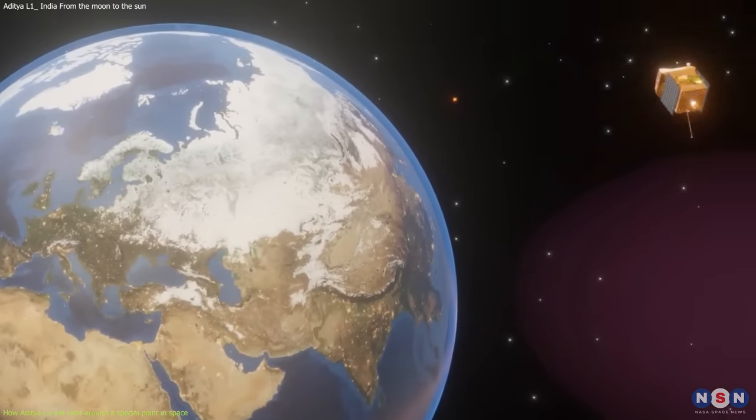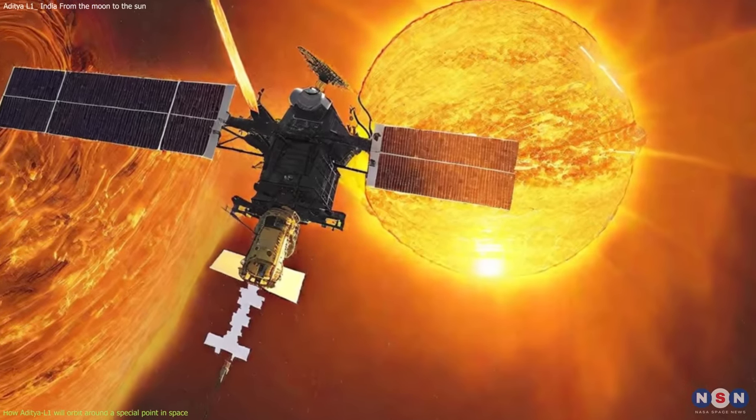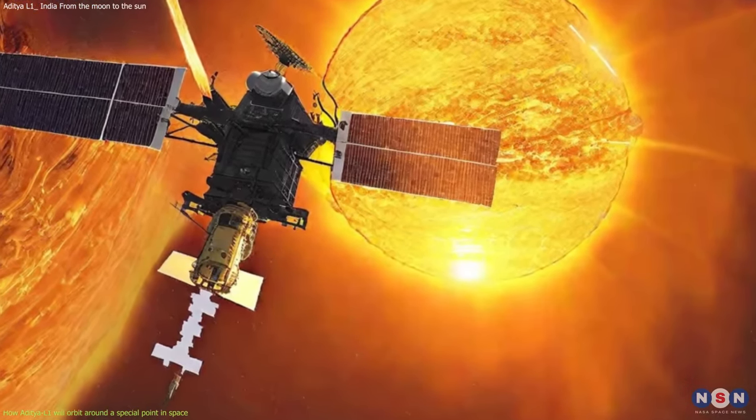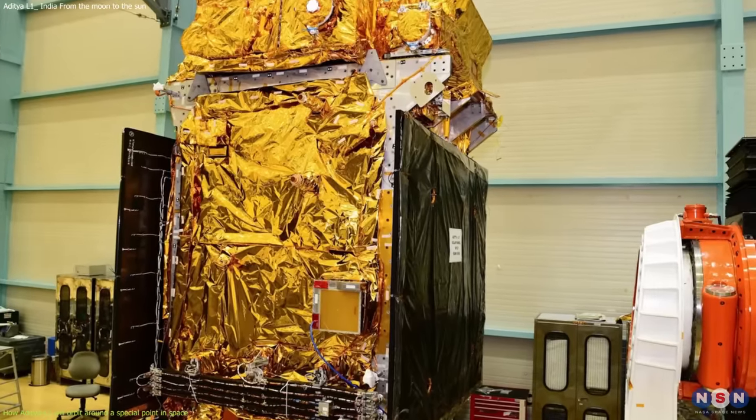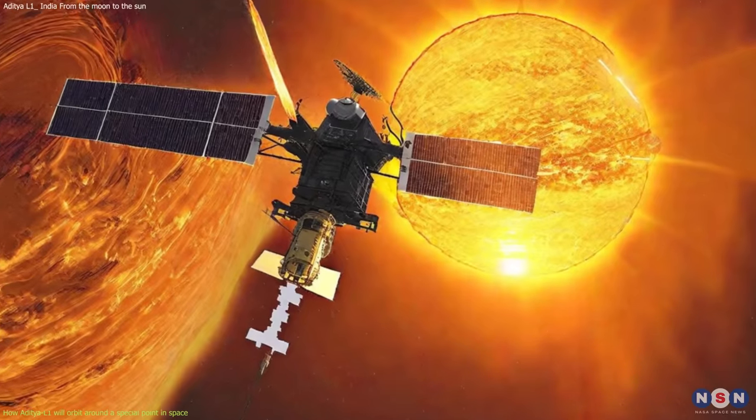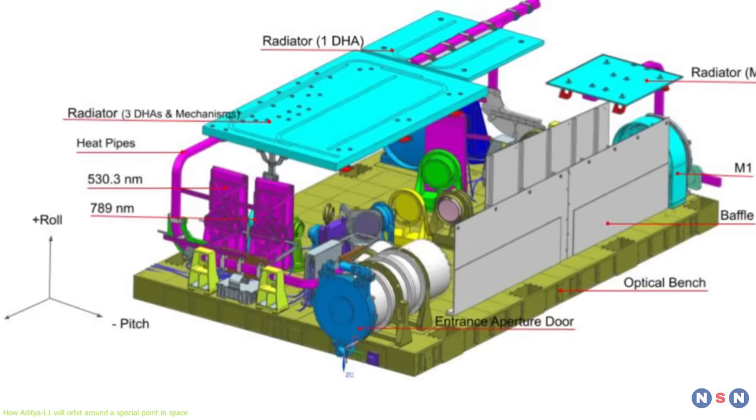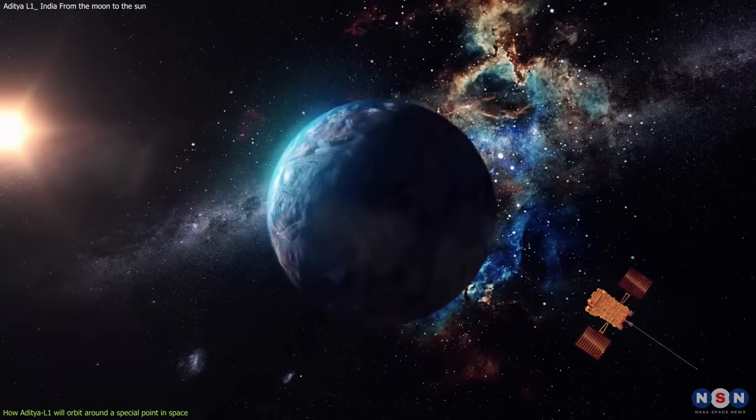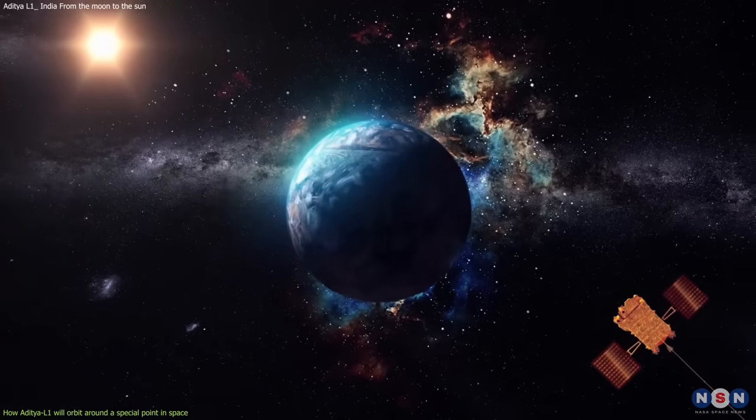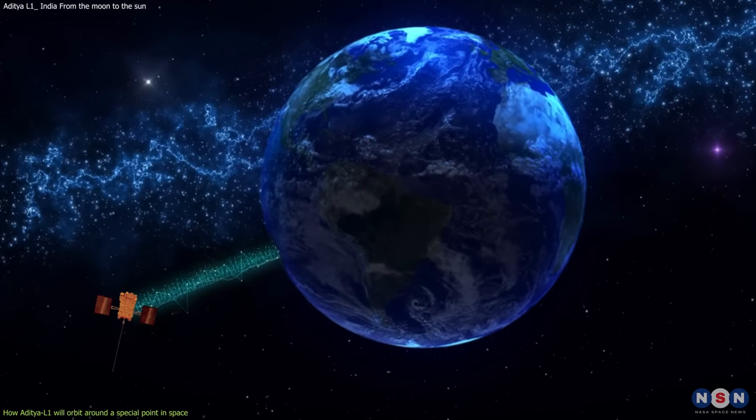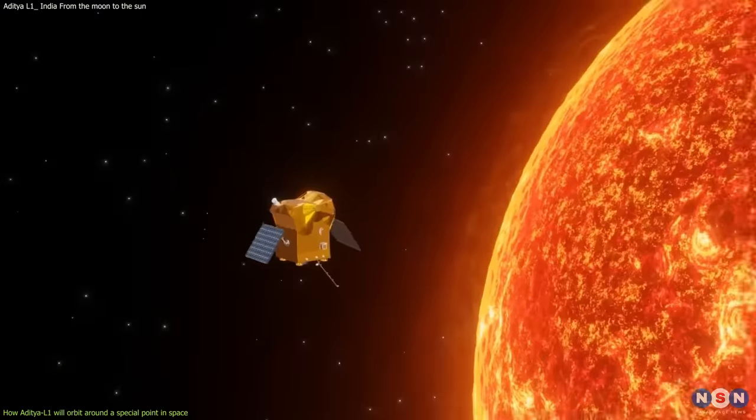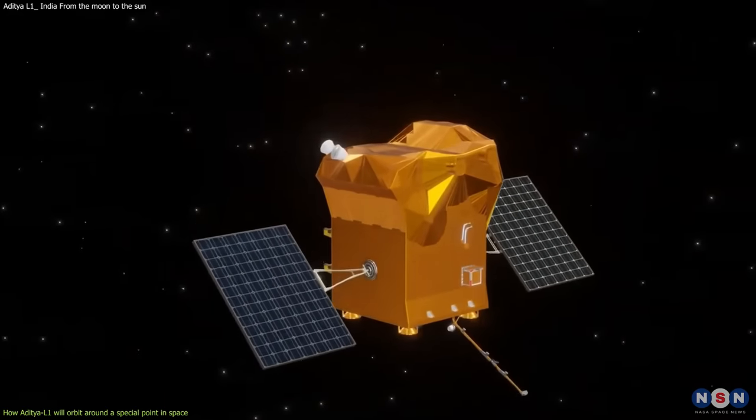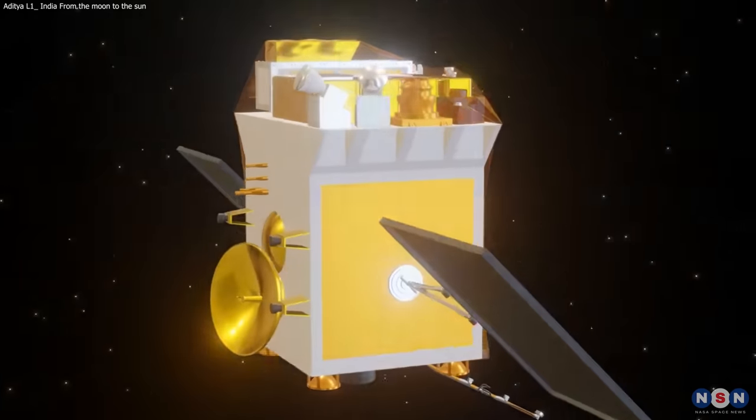On the other hand, Aditya L1 will be exposed to higher levels of radiation and heat from the Sun than if it were orbiting around Earth or the Moon. This means that Aditya L1 needs to have a robust design and protection system to withstand these harsh conditions. For example, the spacecraft has a thermal shield that covers most of its body and reflects most of the sunlight away. It also has a radiator that dissipates the excess heat from the instruments and electronics. Another disadvantage is that Aditya L1 will be farther away from Earth than most other satellites or missions, which means that it will take longer to send commands or receive signals from Earth. This means the spacecraft needs to have a high degree of autonomy and intelligence to perform its tasks and handle any contingencies.